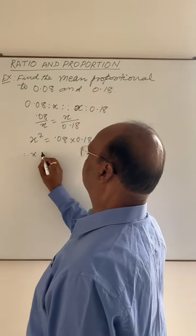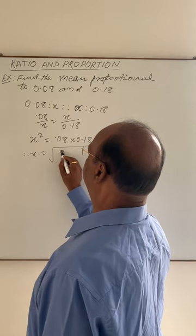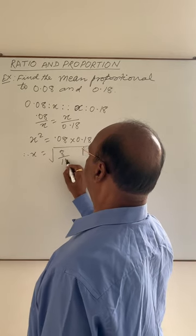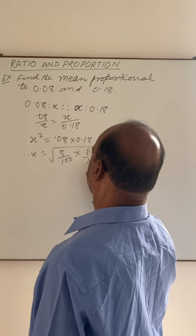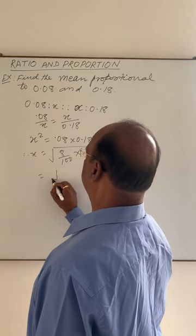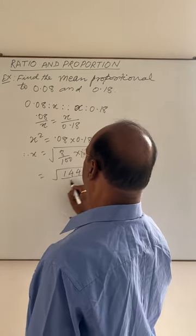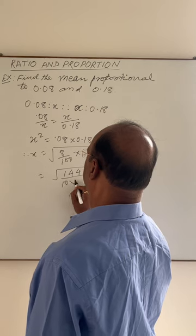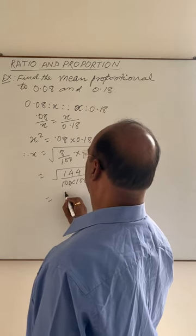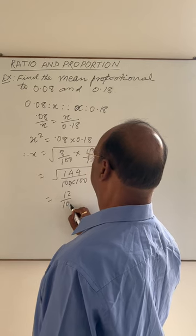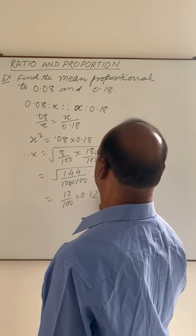Therefore x is equal to, taking square root, this is 8 by 100 and this is 18 by 100. Its square root is 144 by 100 into 100, which is equal to 12 by 100. And this is equal to 0.12.